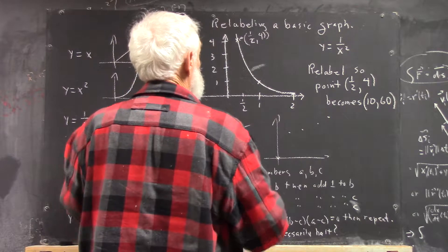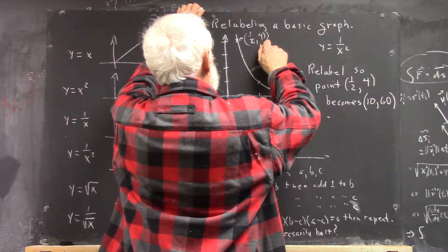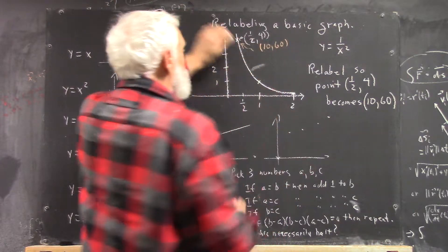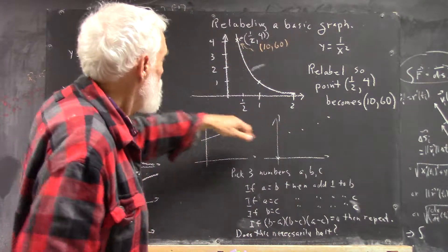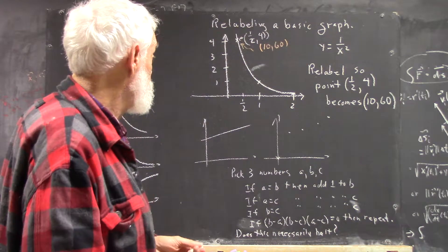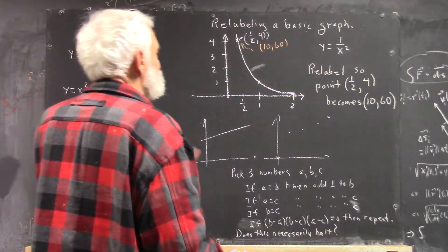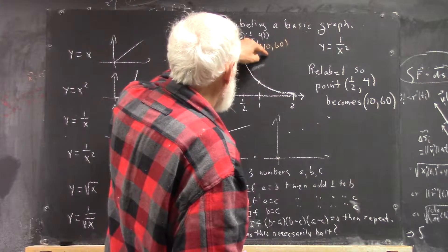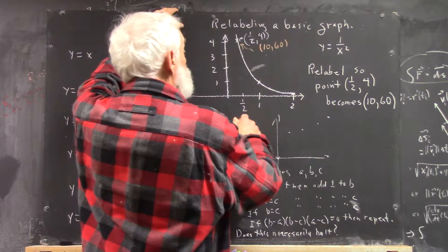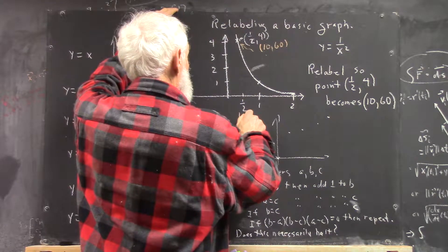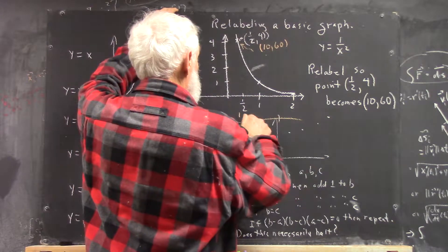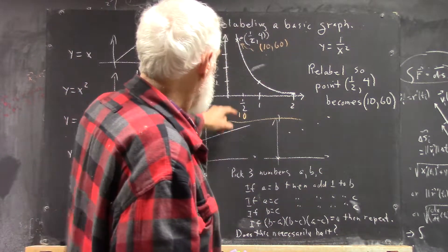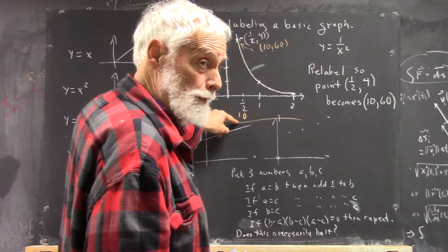Now it's (10, 60). Of course, (10, 60) doesn't fit the x or the y scale, so what do we have to do? Well, instead of 1/2, the x-coordinate at this point is now 10. So I'm going to do a dual labeling here. I'm going to put 10 down here. You can ignore what I have down here. That was for a different class. So instead of 1/2 now, I've got 10.